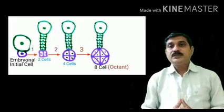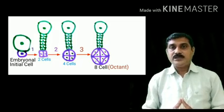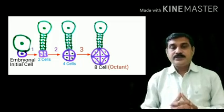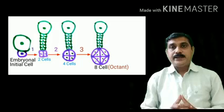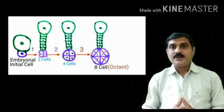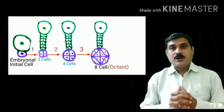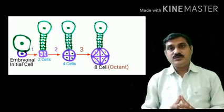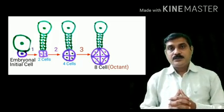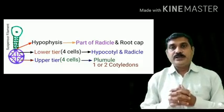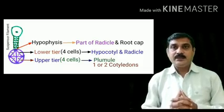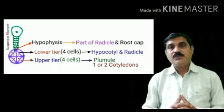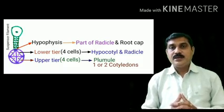Meanwhile, the terminal cell or embryonal cell undergoes three successive mitotic divisions, producing eight cells known as the octant. All the planes of division are at right angles to each other. Hence, two tiers — meaning two layers — are found, each tier consisting of four cells, giving an upper tier and a lower tier.